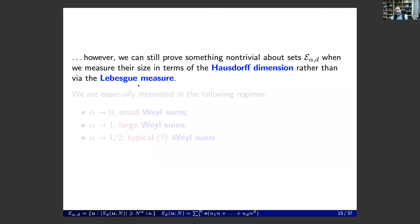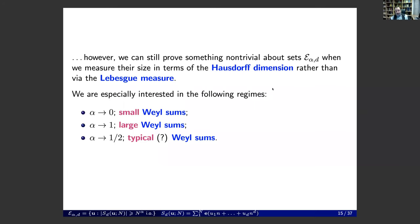We can say something if we measure the size of the sets not via Lebesgue measure — that tool is too powerful — but via Hausdorff dimension, which is a more refined tool allowing non-trivial statements. We'll be interested in three regimes: small Weyl sums (alpha → 0), very large sums (large alpha, a very small set), and alpha → 1/2, which should be the typical case — though we still don't know this.